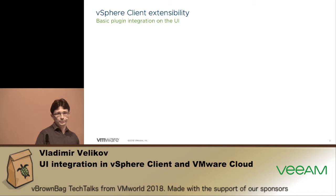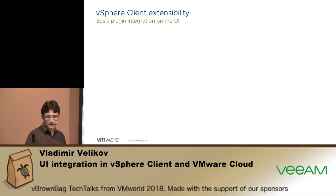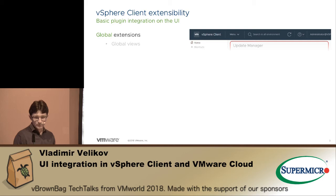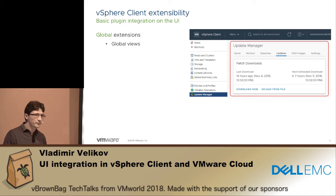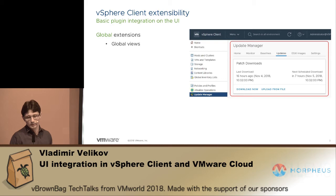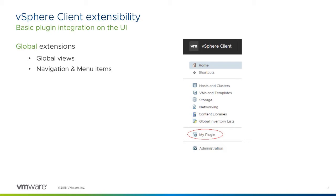The extensibility of the vSphere client falls into two categories: context specific and contextless. The contextless ones we call global extensions — global views, essentially the ability of a partner solution to integrate their dashboards into the client, their custom workflows, taking advantage of most of the space area of the vSphere client. They also have a single entry point for their navigation in the object navigator or the main menu.